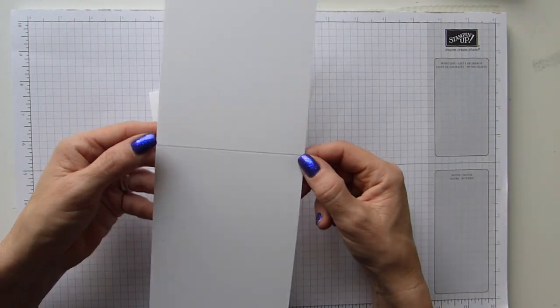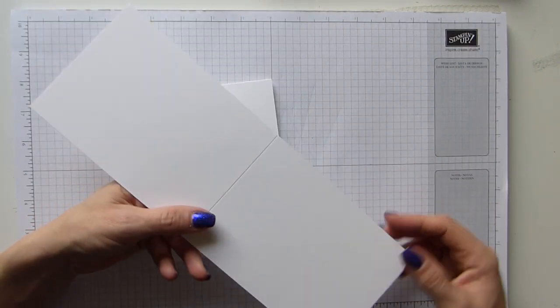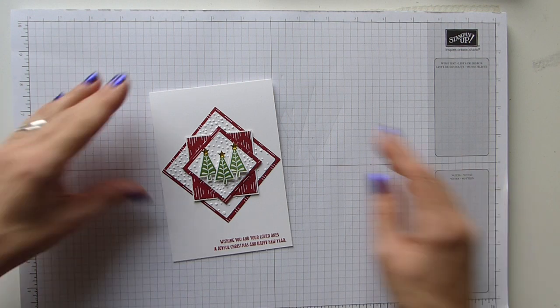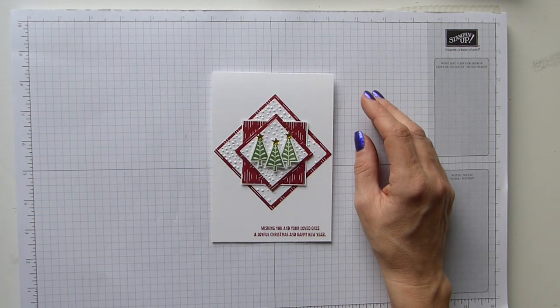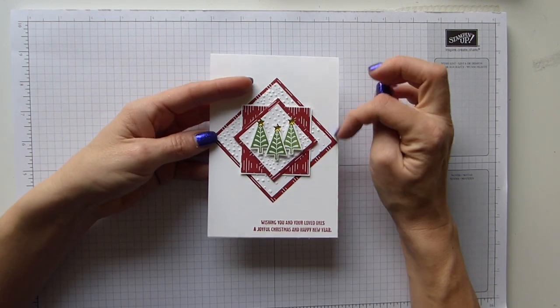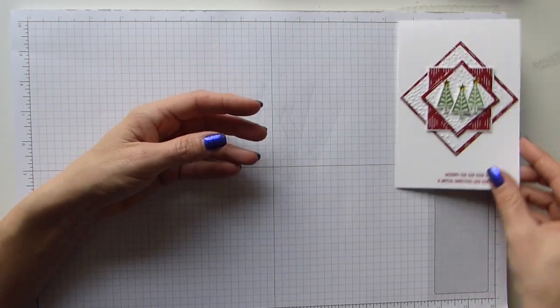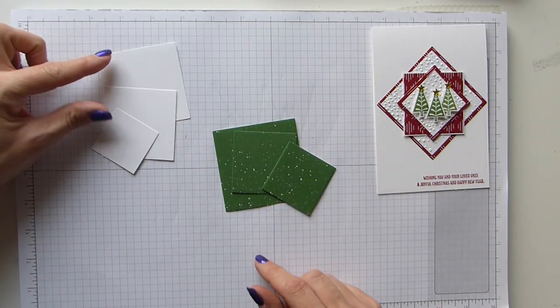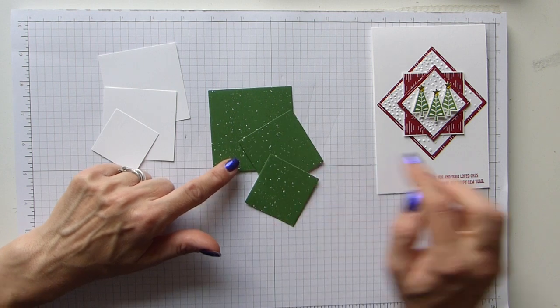So it is a thick whisper white base which, as with all my cards, is scored in half and cut in half standard UK A4 size cardstock. And I've actually used the layering squares for this one, so I've already pre-cut them just to save time. So I have three in whisper white and three in the Be Merry DSP.